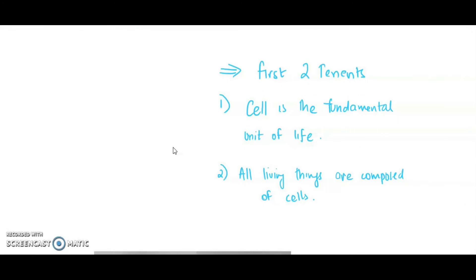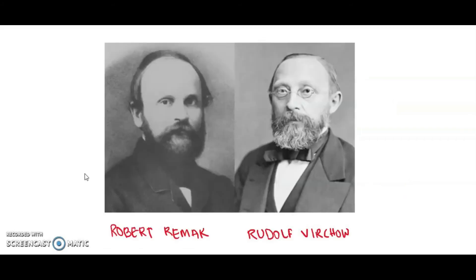Schleiden, however, believed in spontaneous generation — he believed that cells form through crystallization rather than cell division. It was in the 1850s that two Polish scientists living in Germany gave the third tenet of the cell theory: that cells originate from existing cells. Robert Remak, a neurologist and embryologist, in 1852 published for the very first time convincing evidence that cells are derived from other cells.